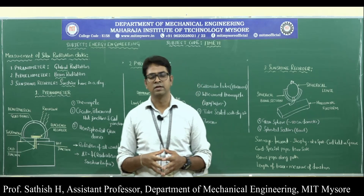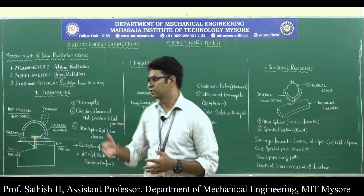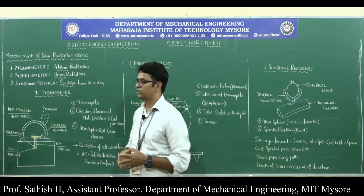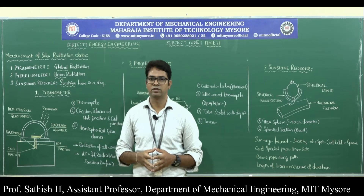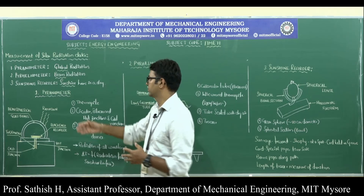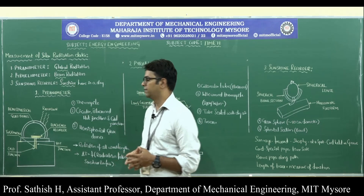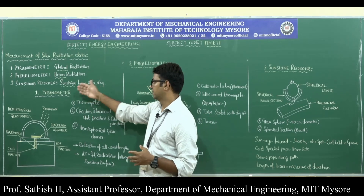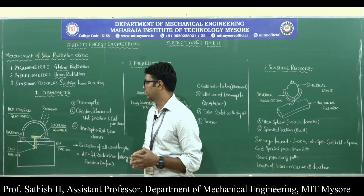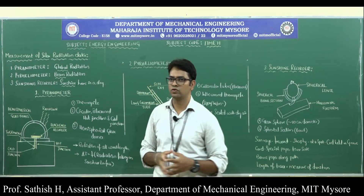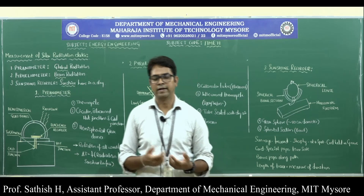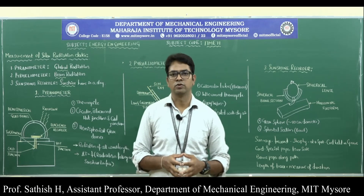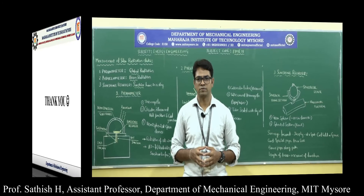In summary, the three instruments used to measure solar radiation data are: the pyranometer for global radiation, the pyrheliometer for beam radiation, and the sunshine recorder for measuring sunshine hours in a day.